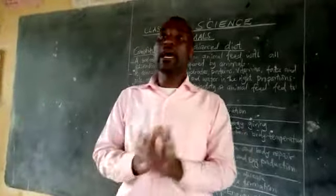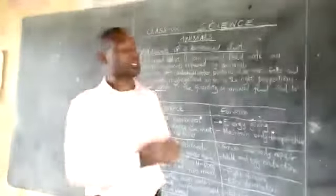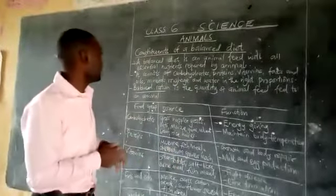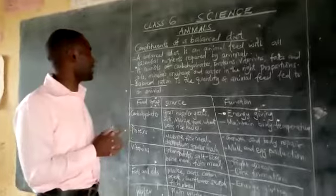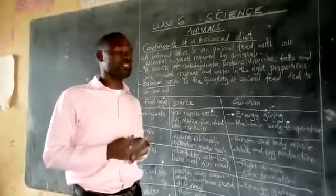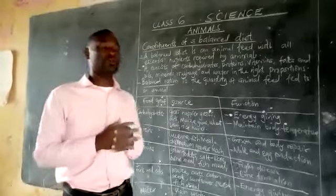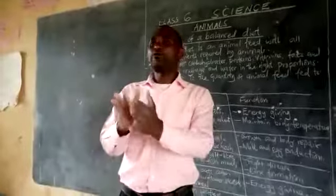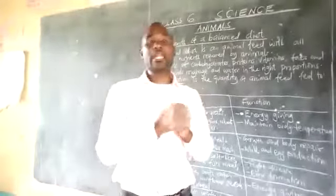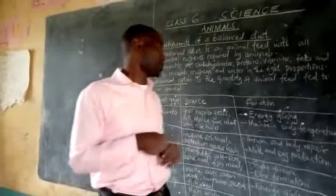So when the feed has all those food groups in the right proportions, then we say that is a balanced diet. Then we also have what we call a balanced ration, which is the quantity of animal feed fed to an animal. So that amount of feed given to a particular animal is what we are calling a balanced ration.